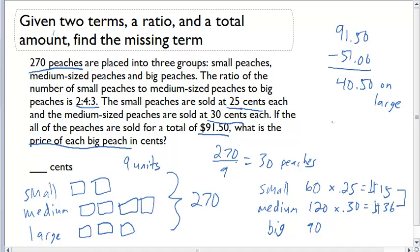Now, we figured out that big peaches was 90 sold. If we sold $40.50 worth, how can we figure out what the price was of each peach? So the price per peach is going to have to be $40.50 over 90. And that's going to give us $0.45 per big peach.